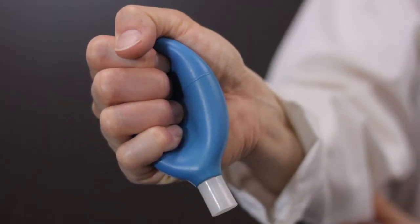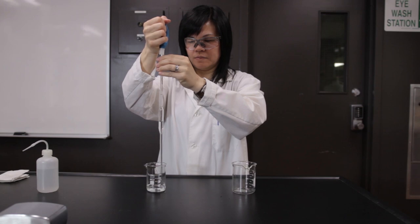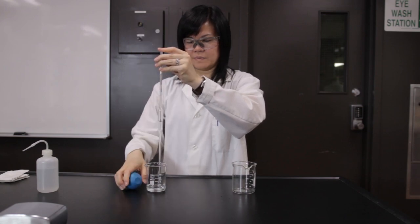Compress the bulb. Place the bulb onto the flat end of the pipette, making sure the bulb is flush with the end to prevent air leaks.